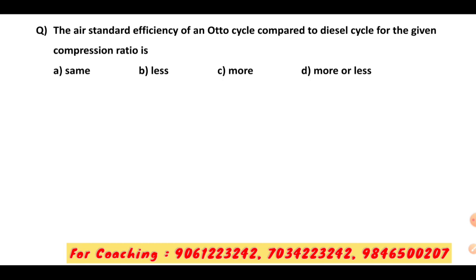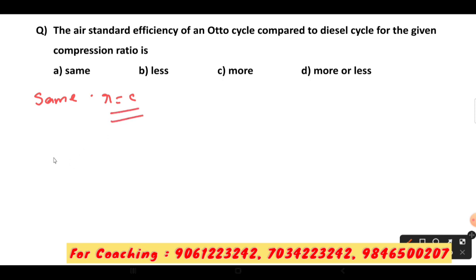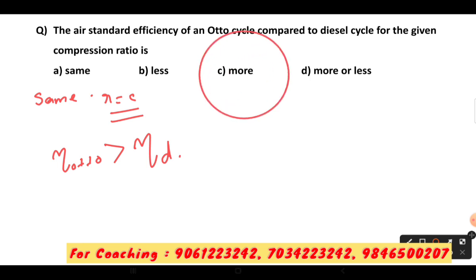The highest standard efficiency of the Otto cycle compared to the diesel cycle for a given compression ratio: if we look at the same compression ratio, the efficiency of the Otto cycle is slightly greater than the efficiency of the diesel cycle. So for a given compression ratio, the Otto cycle has higher efficiency compared to the diesel cycle.